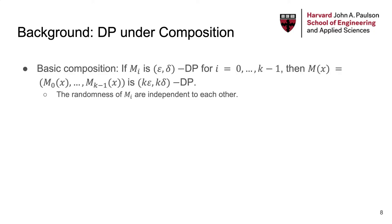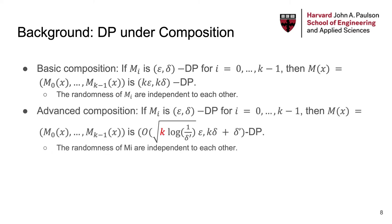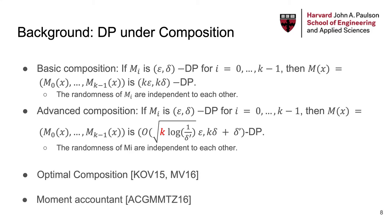There are already many composition theorems in the literature. The basic composition theorem says that privacy degrades at most linearly with the number of mechanisms executed. However, if we are willing to tolerate an increase in the delta term, the privacy parameter epsilon only needs to degrade proportionally to the square root of the number of mechanisms. The advanced composition theorem is still not exact; it has been shown how to compute the optimal bound for composing K mechanisms. If we know specific properties of the underlying DP algorithms, we can further improve the privacy composition bound.